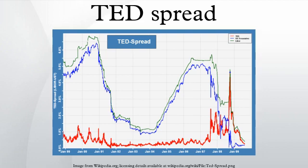The TED spread is the difference between the interest rates on interbank loans and on short-term U.S. government debt. TED is an acronym formed from T-Bill and ED, the ticker symbol for the euro-dollar futures contract.